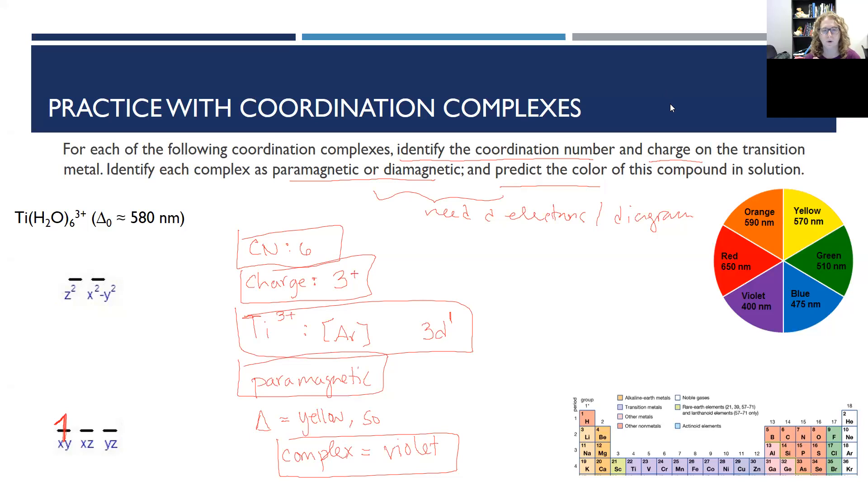All right, here are our important pieces of information. First off, six ligands, so coordination number six. Second off, water is neutral, so that three plus charge goes on the titanium. Third off, if titanium is three plus, then you have one D electron left, and so I have to just start filling on the bottom. Paramagnetic is my next conclusion because I have unpaired electrons, and then I look at that 580 nanometer light, I notice that it lives in yellow, so my complex is going to be violet.